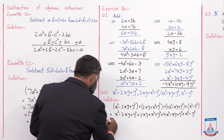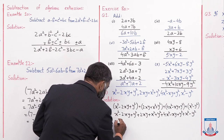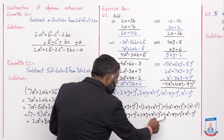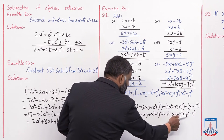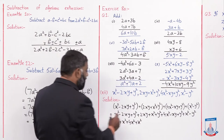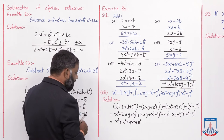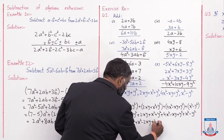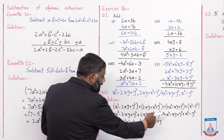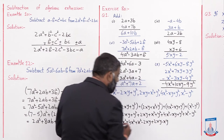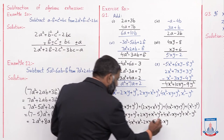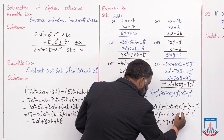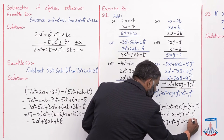Ab like terms ko ekattha likhenge. X² wali terms: x² + x² + 4x² + x². XY wali terms: minus 2xy + 2xy, then minus xy. Y² wali terms: plus y² + y² + y², and then minus y².